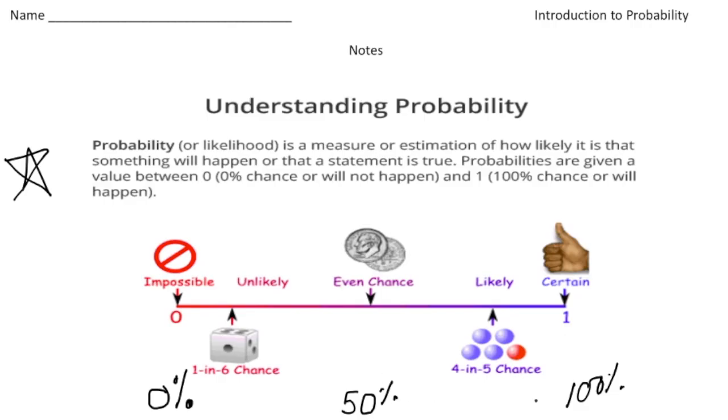And all the numbers between 0 and 50 are the events between impossible and even. And all the numbers between 50% and 100% are all the likely outcomes. So for example, you could say right about here is 75% and right here would be about 25%. So again, think of probability as a number line where 0 means it's impossible and then number 1 means 100% or certain is going to happen.